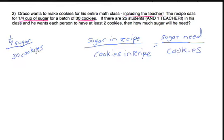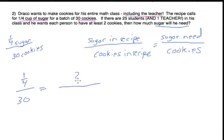Half of this proportion we already have: 1/4 cup of sugar for 30 cookies. The sugar needed is what we're trying to find — we'll write a question mark. Now, we want to know how many cookies we need in total. You have to read the problem carefully. There are 25 students and one teacher — that means there are 26 people who are going to eat the cookies. And Draco wants each person to have at least two cookies. So that is a total of 52 cookies.